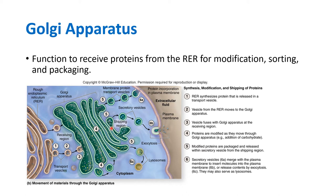The Golgi apparatus ships proteins the same way the rough ER does — part of it gets pinched off, forming vesicles that carry the tagged proteins to their final destinations. Some proteins exit the cell entirely and go to another cell, some get embedded within the plasma membrane and become part of it, and some packaged proteins become a new organelle called the lysosome.